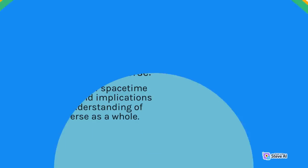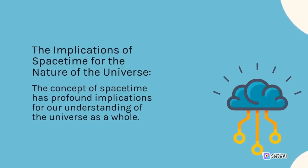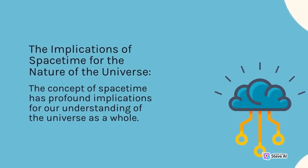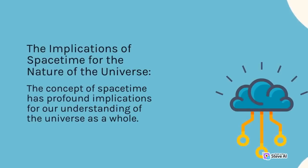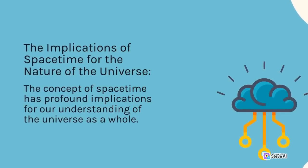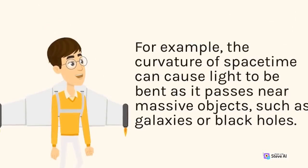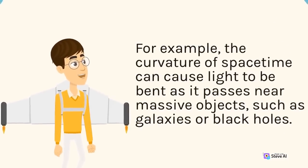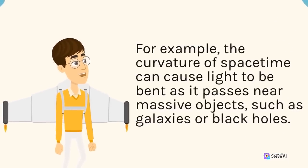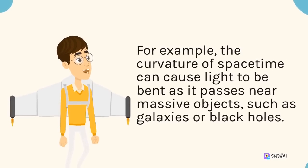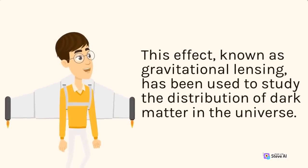The concept of spacetime has profound implications for our understanding of the universe as a whole. For example, the curvature of spacetime can cause light to bend as it passes near massive objects, such as galaxies or black holes. This effect, known as gravitational lensing, has been used to study the distribution of dark matter in the universe.